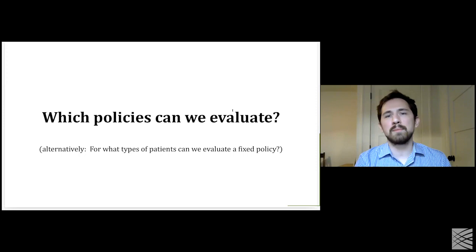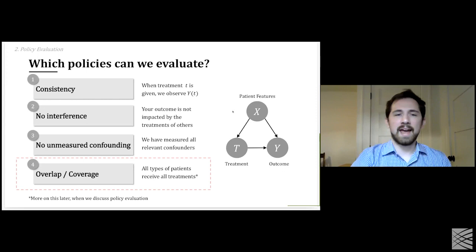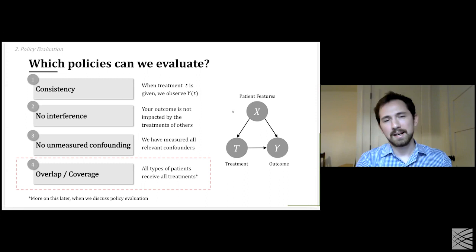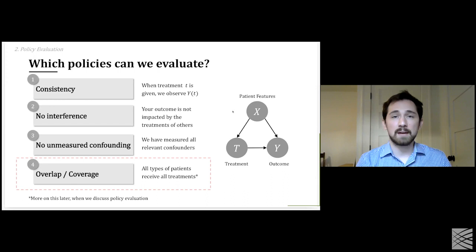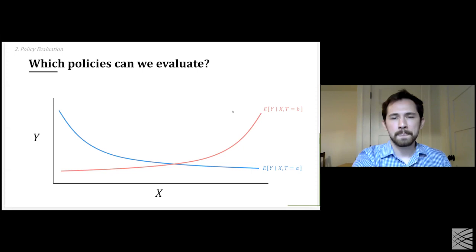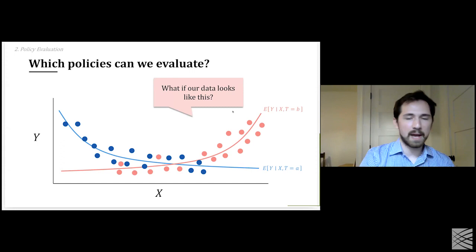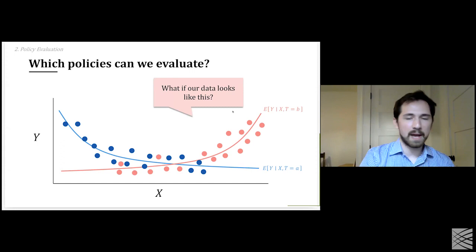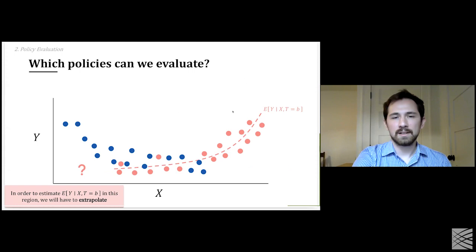I'll talk about a particular subset of problems that arise in trying to do policy evaluation from observational data — specifically around the last assumption, coverage and overlap. I'm going to assume the first three assumptions hold, and my point will be that even if they do, there can still be statistical challenges in estimating the values of all policies. In reality, our data might look something like this, and we have to estimate conditional expectations from it.